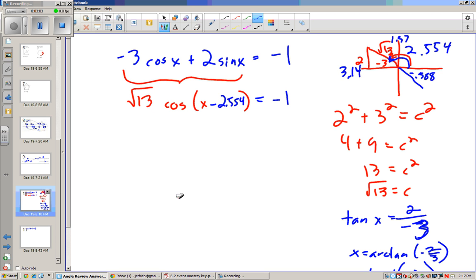Alright, now we have to just solve it using what we did from last chapter. So I'd first divide by root 13. So that's negative 1 over root 13. And then I take the arc cosine of both sides.